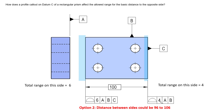Option two tells us the distance between the sides could be 96 to 106 millimeters, because this surface can go zero this way and the left surface can go six this way, growing the nominal 100mm basic dimension to 106. In the other direction, four millimeters shrinks it to 96. This option is also not correct.